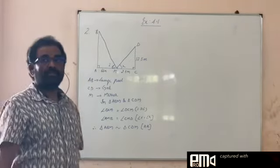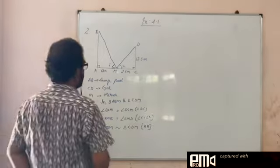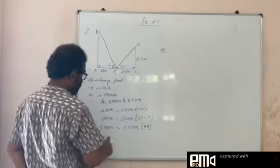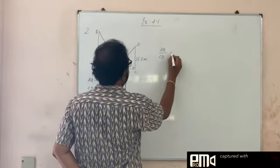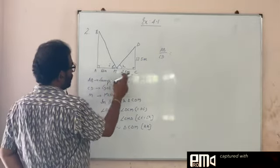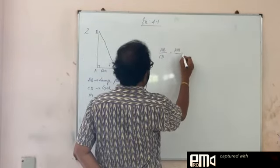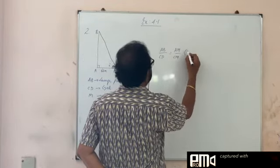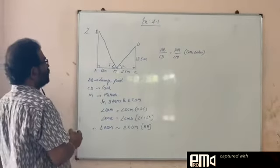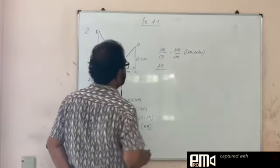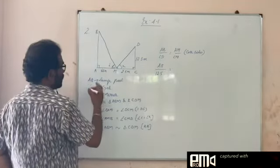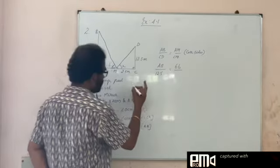When two triangles are similar, the corresponding sides are proportional. AB by CD is equal to AM by CM. AB by CD because they are corresponding sides. We do not know what is AB, so AB divided by CD, what is CD? 1.25. 1.25 is equal to AM which is 6m, CM is 2.5m.